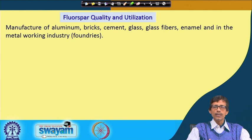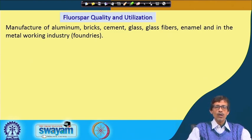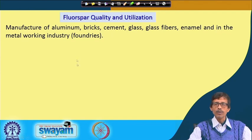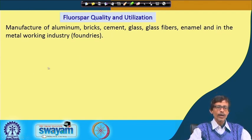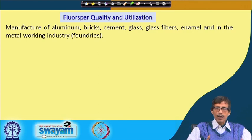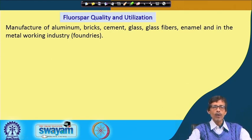Similarly, while making bricks, a major constituent is calcium oxide and calcium-based material, so the source of calcium as calcium fluoride can be utilized for making bricks. In a similar way it can also be a good constituent for cement, glass, glass fibers, enamels, and in the metal working industry — foundries where we can extract aluminum or any other metal. You never know where fluorspar will be utilized, from aluminum production to glass fibers.